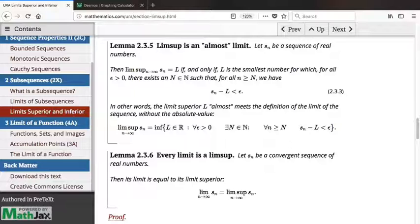I'm going to blur out part of this definition and just look at these four clauses: for all epsilon greater than or equal to zero, there exists an N which is natural, such that for all N greater than or equal to N, we have Sn minus L, where L here is the lim sup, is less than epsilon.